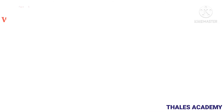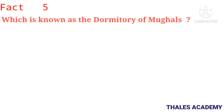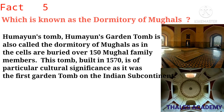Fact 5: Which is known as the Dormitory of Mughals? The answer is Humayun's Tomb. Humayun's garden tomb is also called the Dormitory of the Mughals, as buried in its cells are over 150 Mughal family members. This tomb, built in 1570, is of particular cultural significance as it was the first garden tomb on the Indian subcontinent.